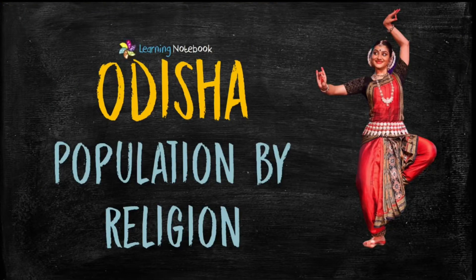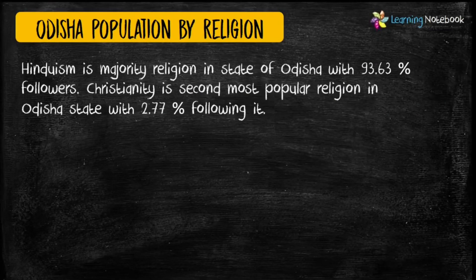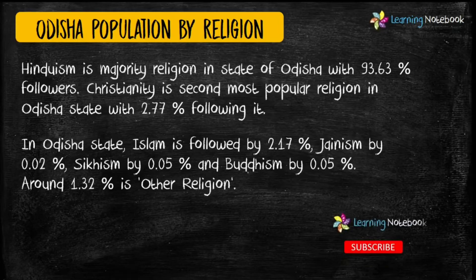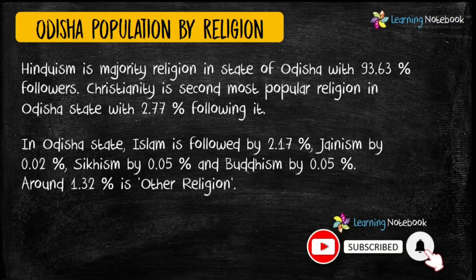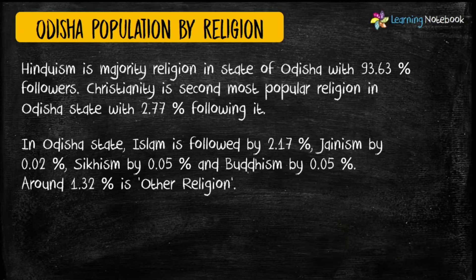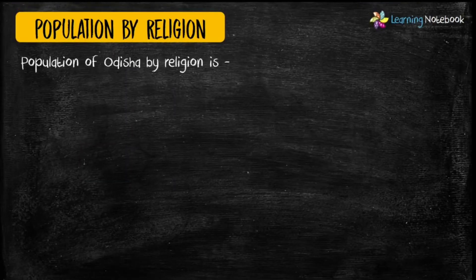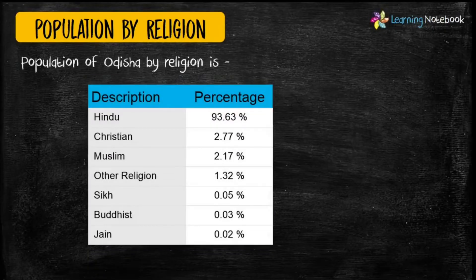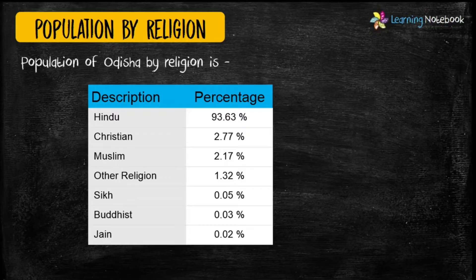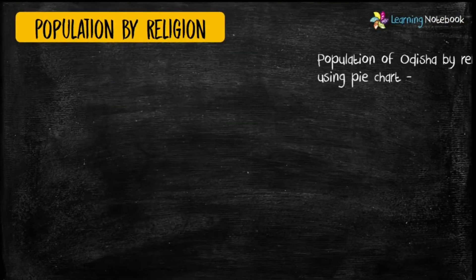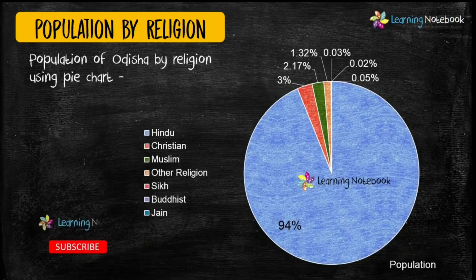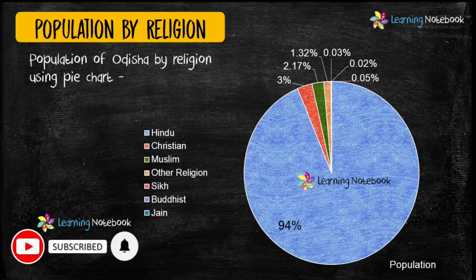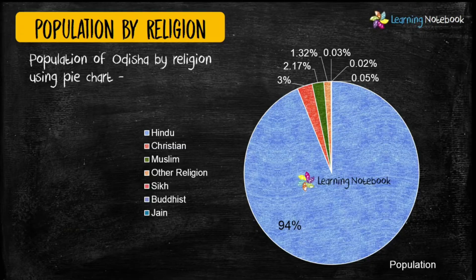You can also include population of Odisha by region. Students, a pie chart is another beautiful way of representing the given data. So you may use a pie chart to show the population of Odisha by religion.